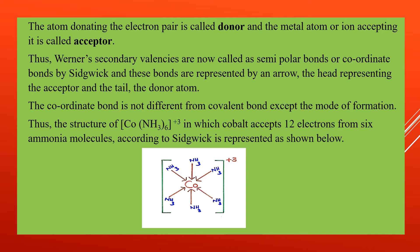The atom donating the electron pair is called the donor, and the metal atom or ion which is accepting the electron pair is called the acceptor. Underline the words donor and acceptor. Sidgwick replaced the secondary valences proposed by Werner with a new name: coordinate bonds, which can also be called semi-polar bonds.